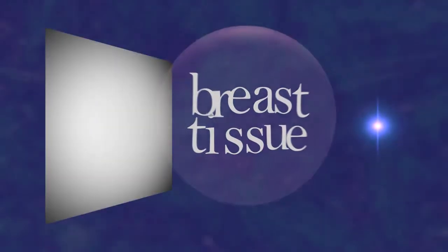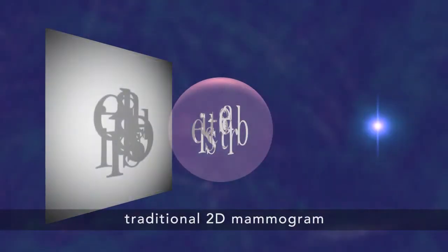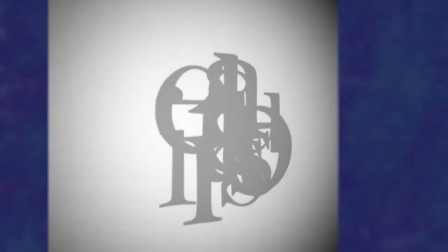Why is this a good thing? Well, a traditional 2D mammogram shows all the breast tissue at a glance. That means one feature can hide in the shadow of another. So it might look like there's cancer where there isn't any, or there could be a tiny cancer we just can't see.